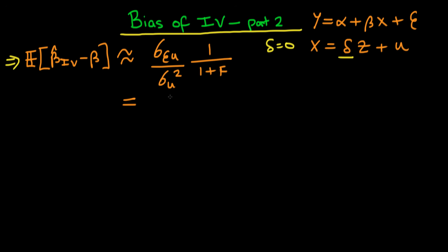So our bias of our IV estimator is approximately equal to the covariance of epsilon with u divided by the variance of u. I stated at the end of the last video that this actually happens to be the bias of a least squares estimator in the event that delta equals 0.